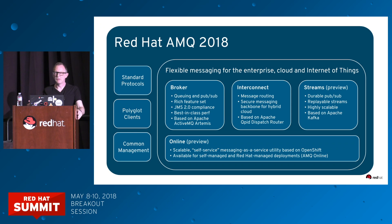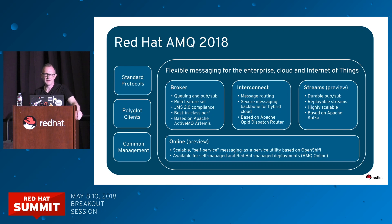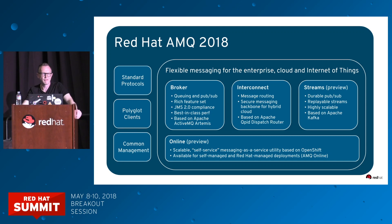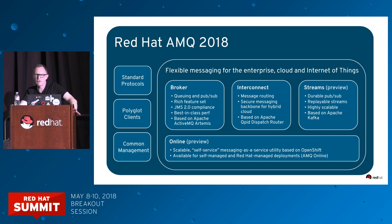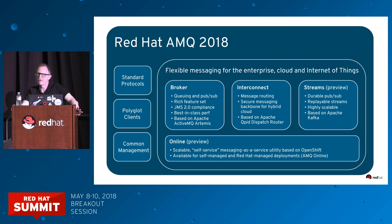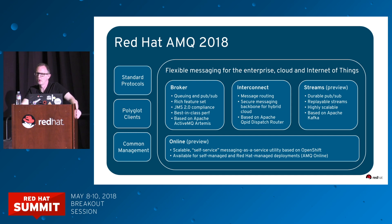If you saw the keynote demo on Tuesday where we did the real-time load balancing across the secure hybrid cloud, that was using the Interconnect technology. And what we're here to talk about today is Streams — the next piece we're adding to the AMQ offering. AMQ Streams is a productization of Apache Kafka, with a special focus on deploying and managing Apache Kafka on OpenShift.